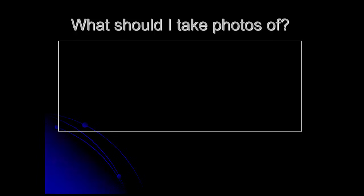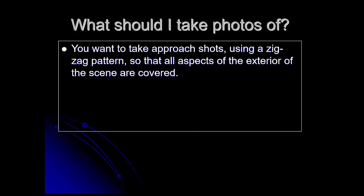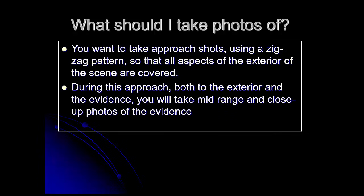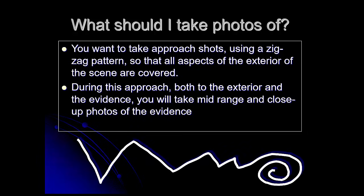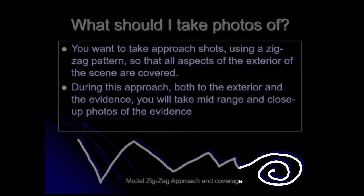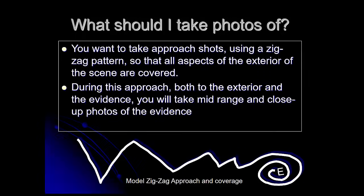When you get to your crime scene, what should you take photos of? When you first arrive, you want to take approach shots. Approach shots show the exterior of your location, mainly coming in toward your entrance. You want to use a zigzag pattern as you get closer to any evidence at the scene, so that all aspects of the exterior are covered. During this approach — both to exterior and interior evidence — you want to take mid-range shots and close-up photos. Basically, walk in a zigzag until you reach your evidence, then circle your evidence and continue taking photos as you get closer.